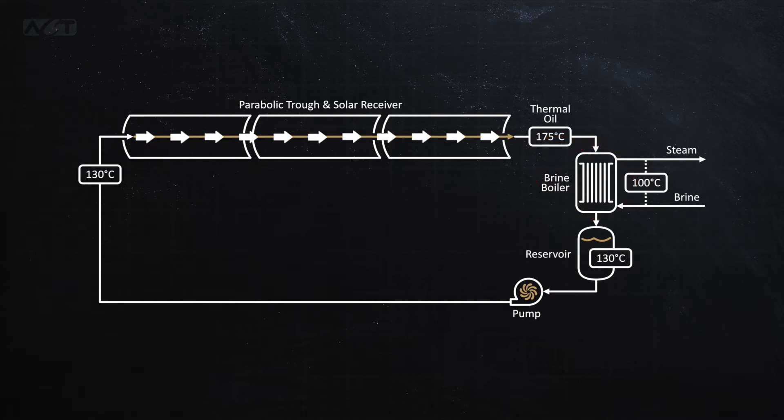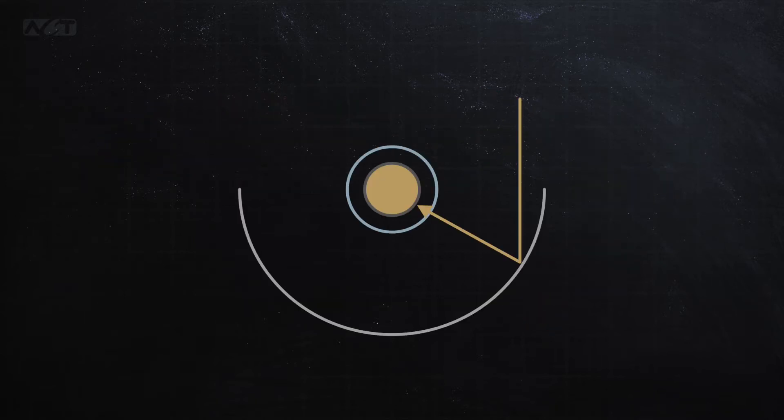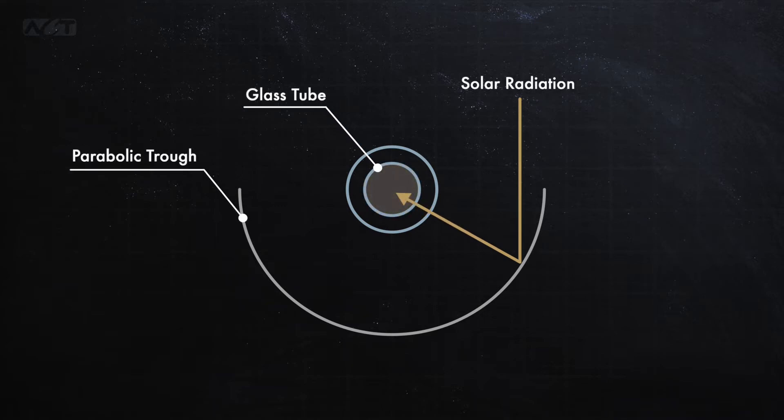Although this state-of-the-art system is quite efficient, we believe that we can improve on it in a few key areas. First, we decided to replace the steel receiver tube with a glass receiver tube. This change allows the incident solar rays to pass directly through the tube and into the working fluid which eliminates conductive and convective thermal resistances through the receiver wall.